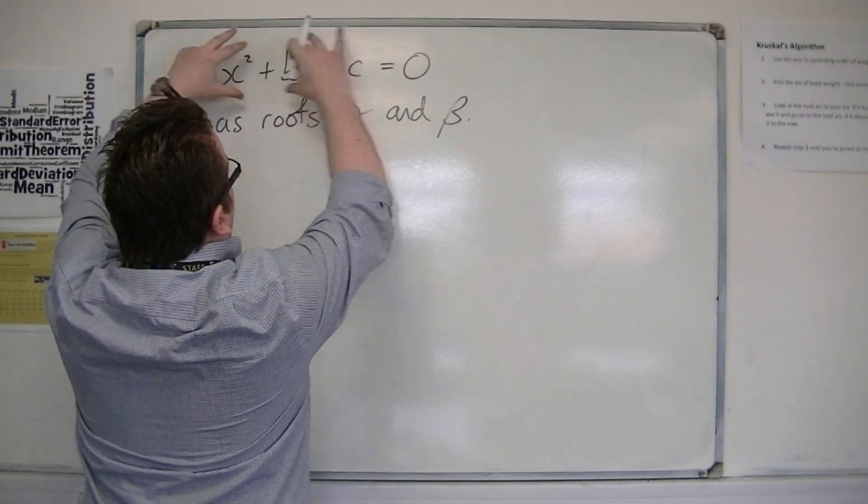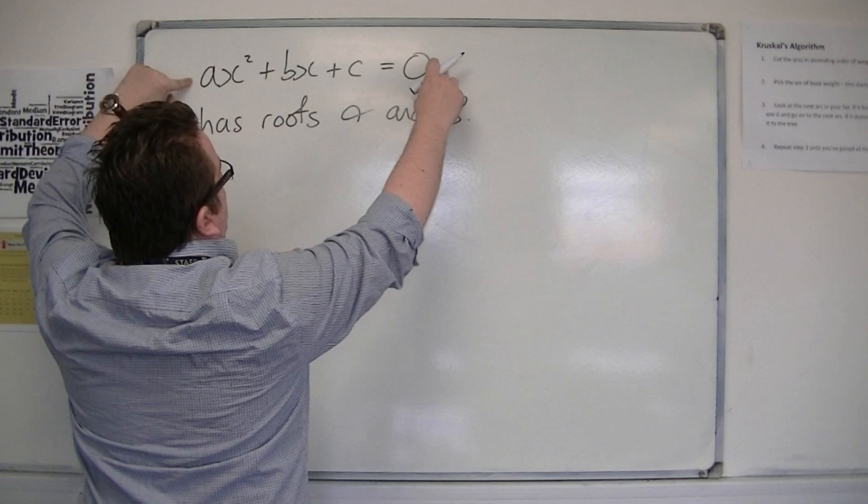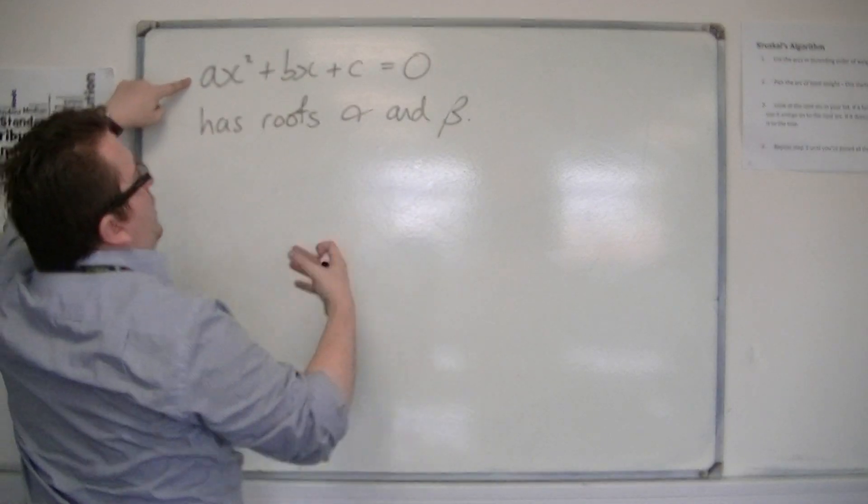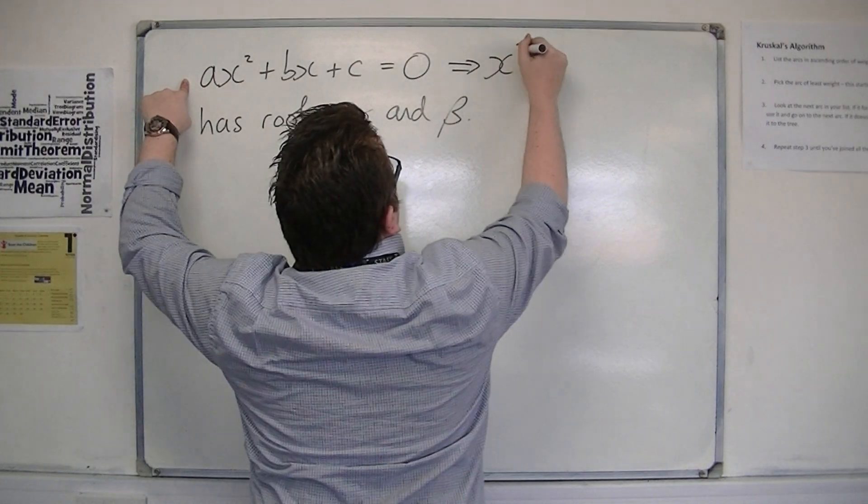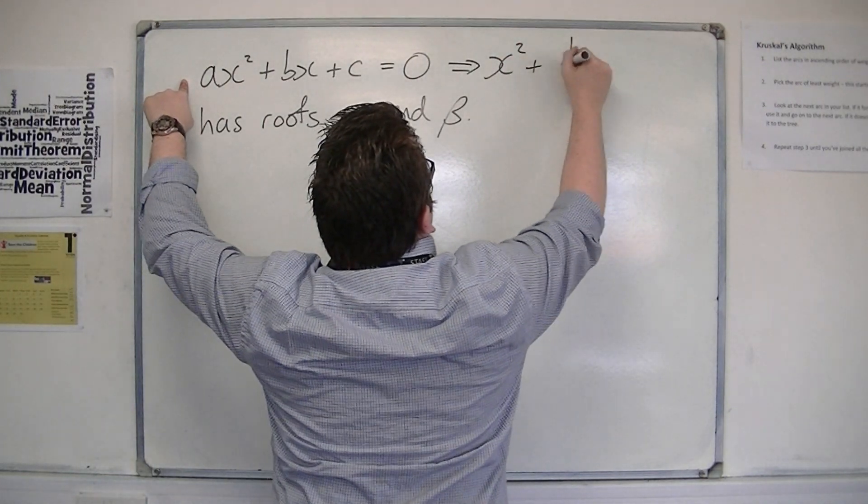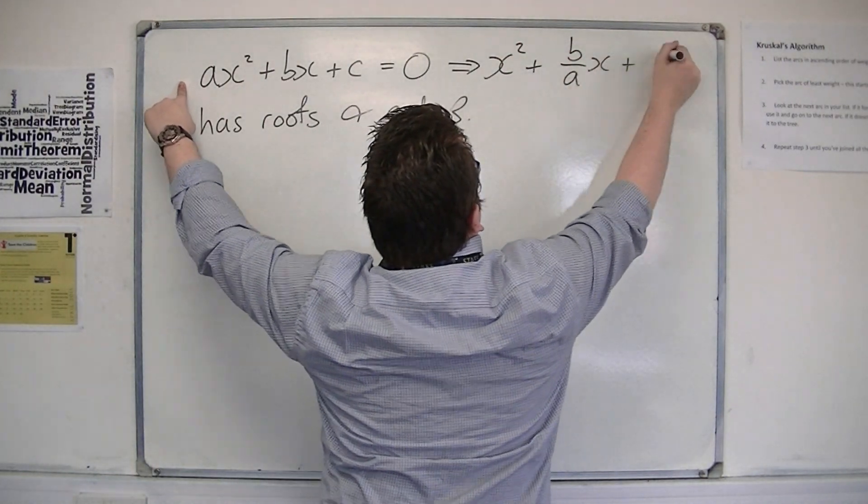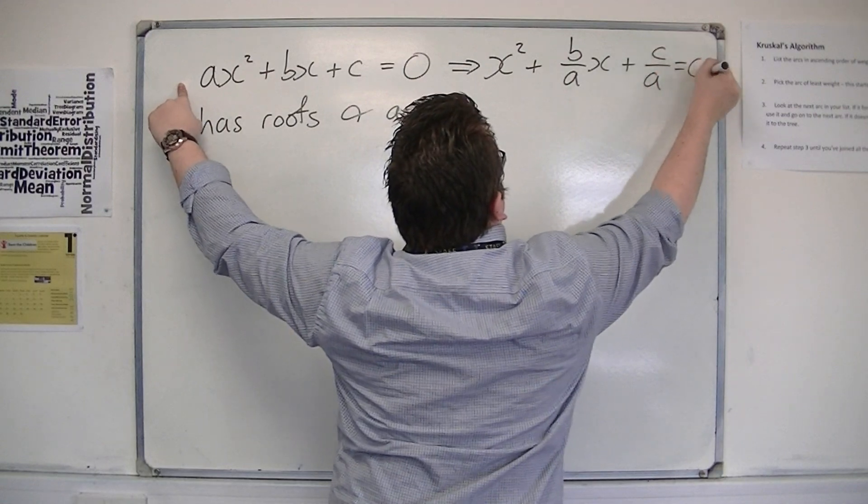So, if you're starting with an equation like this, then to simplify the problem, you can divide through by a to get x² + (b/a)x + (c/a) = 0.